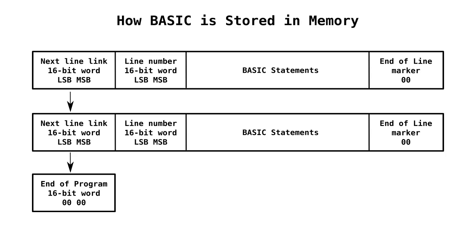This video is going to show how to store machine code routines in the area of BASIC statements. We'll start that area off with 8F, which is the REM token, and then we'll have a space — which is 20 hex, 32 decimal — and then after that we can put our machine code. The only thing we can't do is put a zero in that machine code, because that represents the end of line marker.